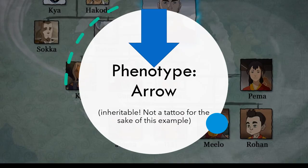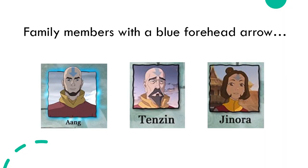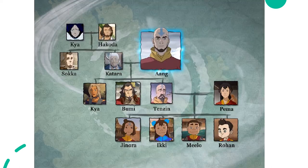Beginning with our first phenotype, the blue forehead arrow — I just want to let you know that this is inheritable and not a tattoo for the sake of this example. The family members with blue forehead arrows will be Aang, Tenzin, and Jinora. Here's the family pedigree that I'll be using; it's a combination of characters from Avatar: The Last Airbender and The Legend of Korra.